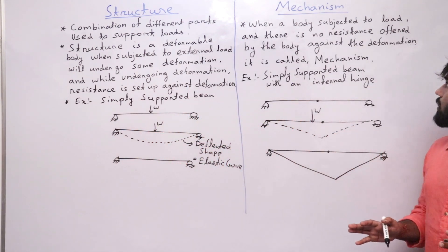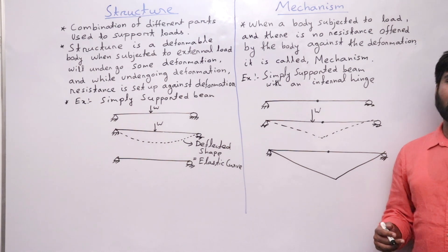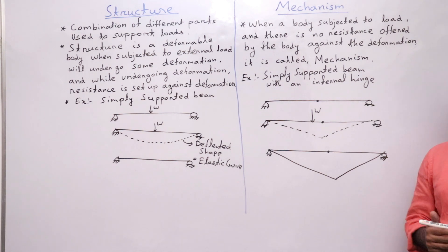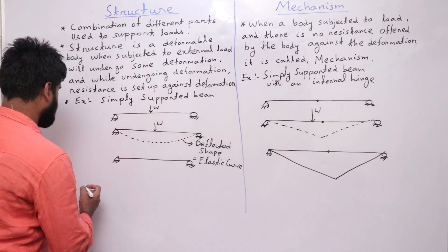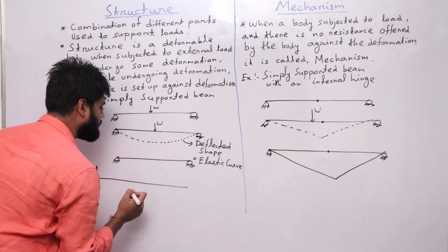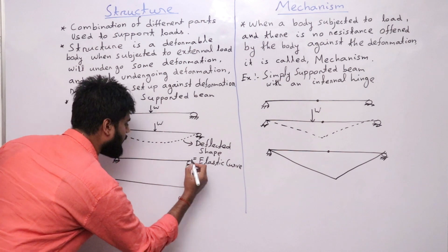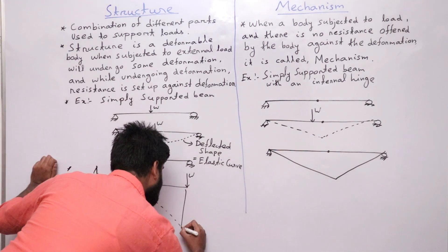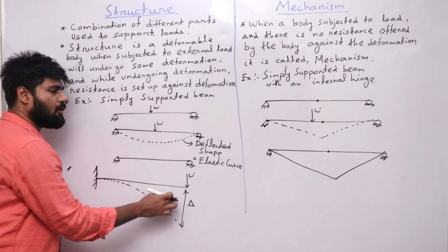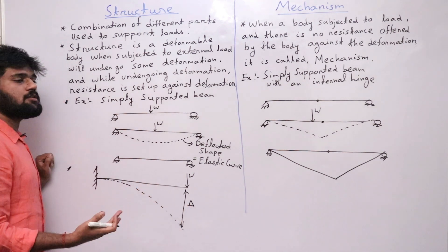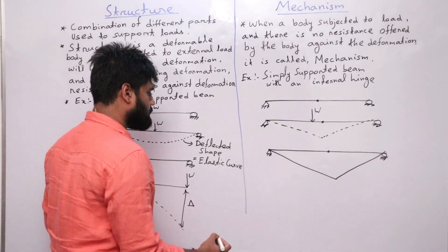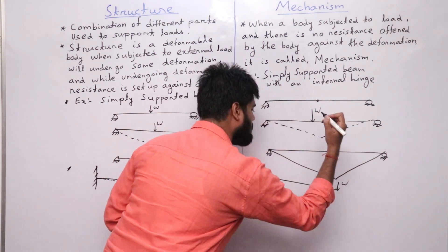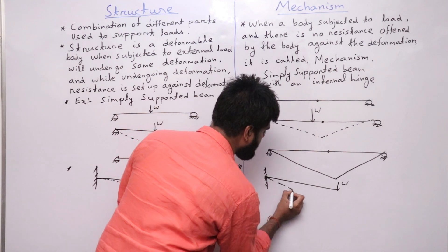I hope you have understood the difference between a structure and a mechanism. I will be discussing mechanism briefly in plastic analysis. For another example, take a cantilever beam. If you apply load W at its free end, the deflected shape will be an elastic curve. After the application of load W the body will undergo deflection delta, and after the removal of the load the body will come back to its original shape.